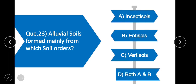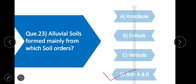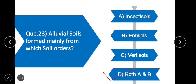Question 23: Alluvial soils are formed mainly from which soil orders? Option D is correct — both A and B — alluvial soils are formed from both Inceptisols and Entisols combined.